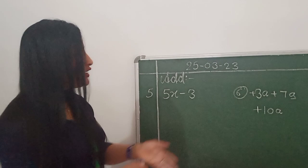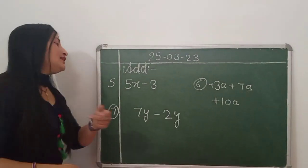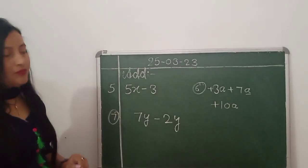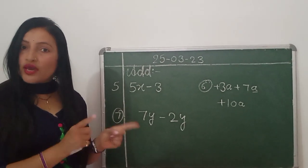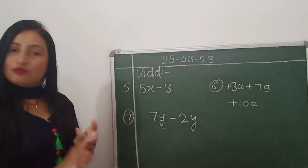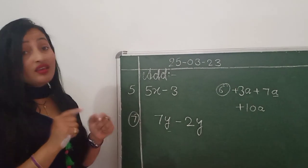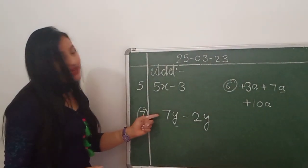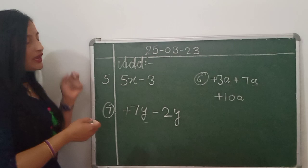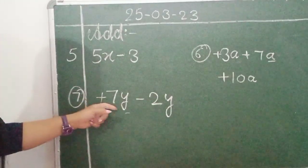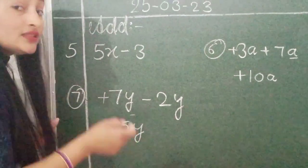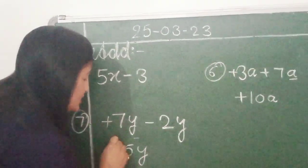समझ गए? One more question — 7by minus 2by. First see: both have 'by' — same term है. Second: sign same है या different? यहाँ sign नहीं दिया — मतलब plus hidden है — then sign different है. So we subtract: 7by minus 2by, we get 5by. And always we write the sign of the bigger number — so sign of bigger.